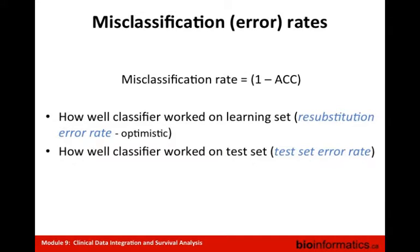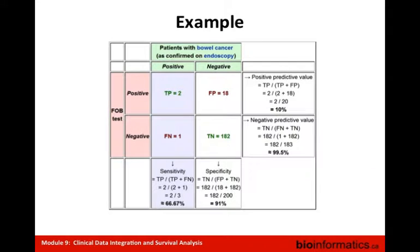Precision and recall — used in text mining — are essentially similar to specificity and accuracy, calculating true positives divided by true positives plus false positives, which can yield very high numbers. The misclassification error rate is basically the complement of accuracy — one minus accuracy. We can have a resubstitution error rate or test set error rate. The resubstitution error rate is very optimistic because it's derived from the same dataset on which the classifier was trained.